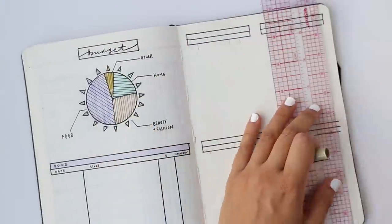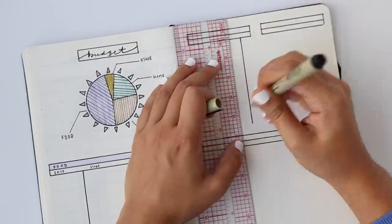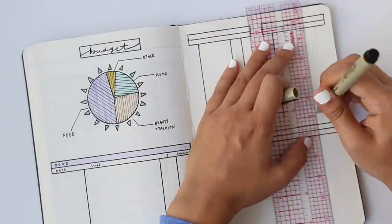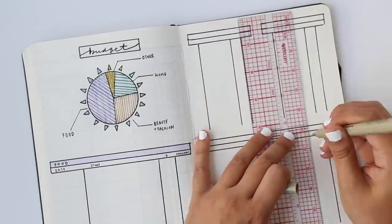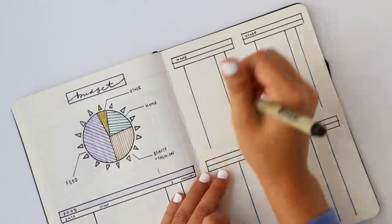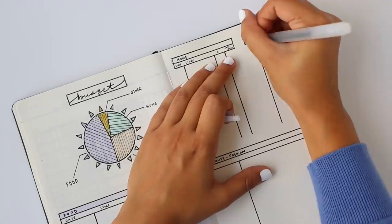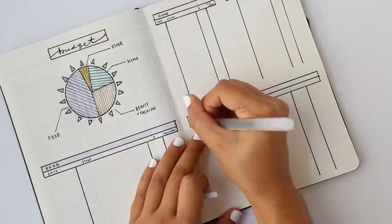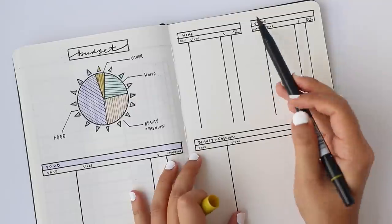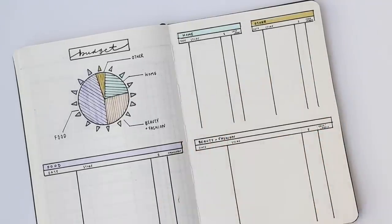So if PC Optimum is having a 20 times the points event I might take advantage of that opportunity to spend more on home cleaning products that particular week, or if Air Miles is offering me extra points for buying things in bulk my food budget might get a little bit larger. It just depends and I like to adjust depending on where I can get the most bang for my buck.